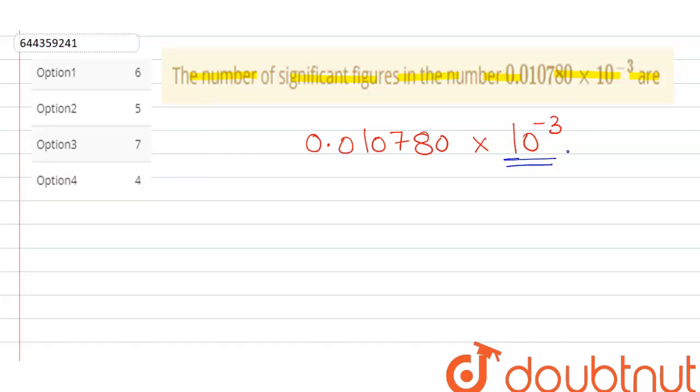That means to count significant figures here, we have to use this number only. We don't have to deal with 10 to the power minus. Now in this, this zero cannot be a significant figure.